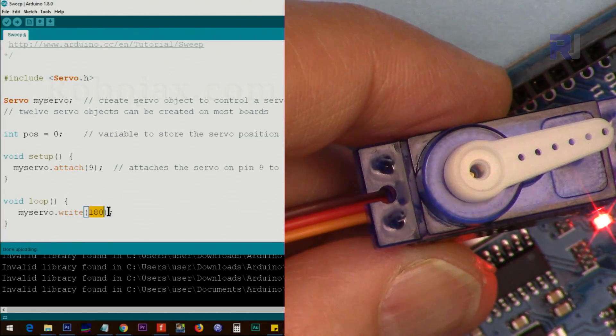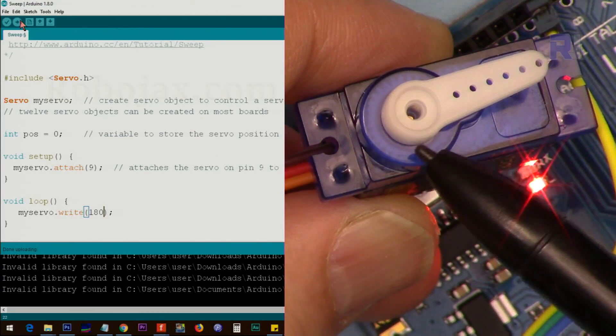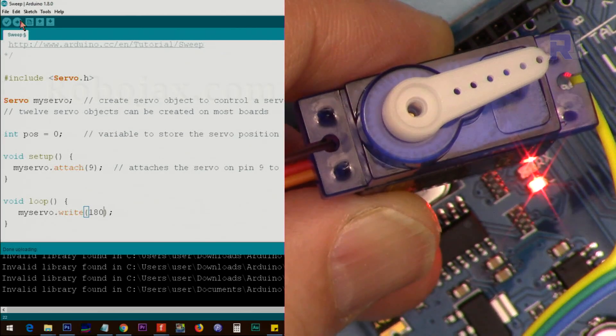This way you can control a servo motor with any angle that you want. It rotates up to here - that's 90, that's 180. So if 90 is here, 120 should be somewhere in here.